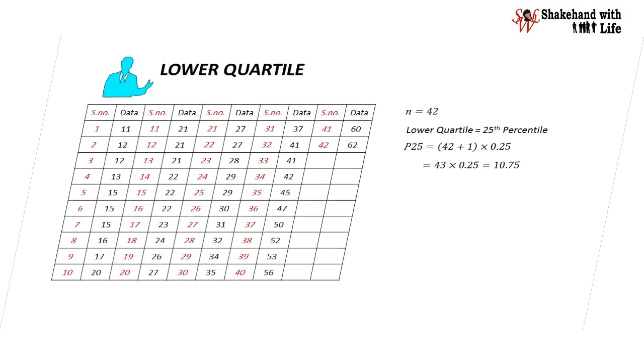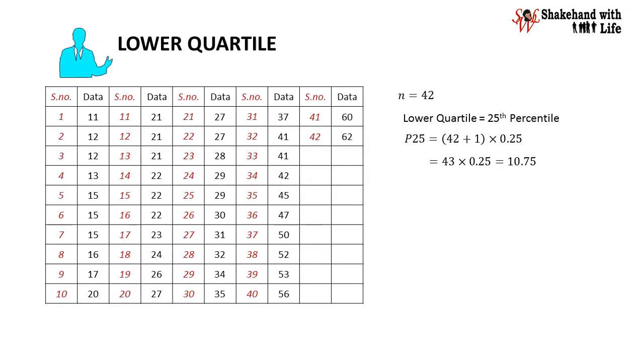Now we will find the lower quartile. Lower quartile is the 25th percentile given by P25 equal to 42 plus 1 multiplied 0.25 or 43 multiplied 0.25 and we get 10.75. Now the data value in position 10.75 is 20.75, hence 20.75 is the lower quartile of the data.